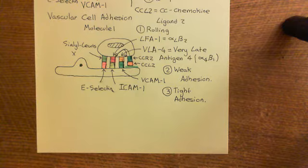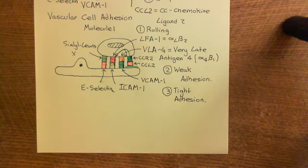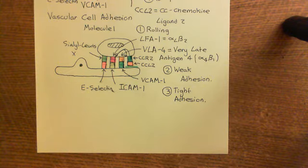That explains how you extravasate neutrophils in both type 1 and type 2 activation, and then in later type 2 activation, how you extravasate monocytes.